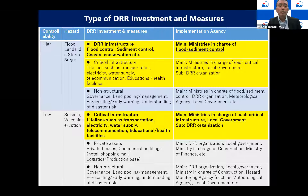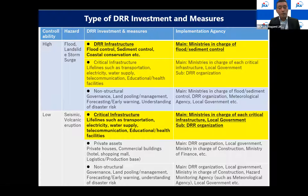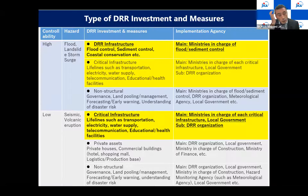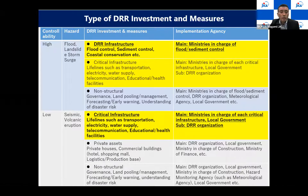In terms of the type of DRR investment, the upper part covers highly controllable hazards such as flood, landslides, and storm surge. These are controllable with structural measures. For these hazard types, we prioritize DRR infrastructure such as flood control, sediment control, and coastal conservation — structural measures — as well as critical infrastructure strengthening including lifeline infrastructure, schools, and hospitals. To tackle flood, landslides, and storm surge, we must deal more with structural measures.